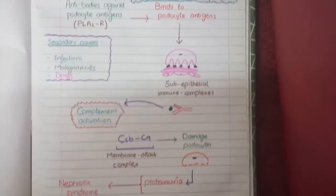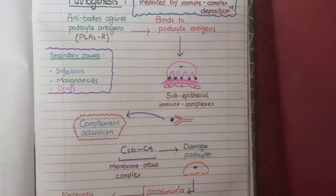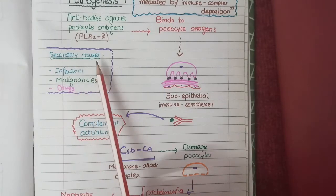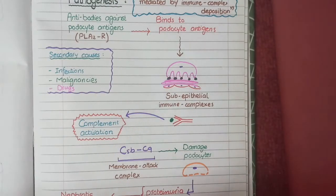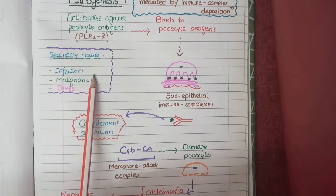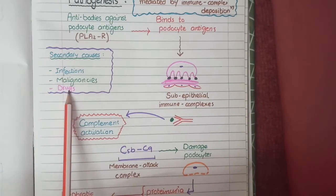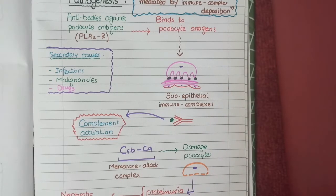Even though most causes of membranous nephropathy are primary, caused by autoimmunity, there are some secondary cases. Secondary causes may include infections such as hepatitis C, malignancies such as cancer of the colon, and drugs like captopril. All these factors can result in development of antibodies that bind to podocyte antigens and cause damage.